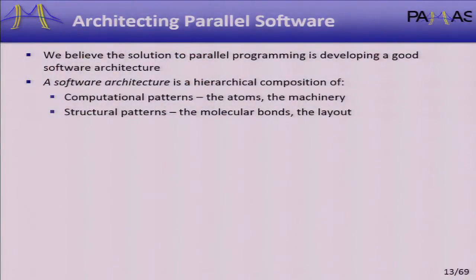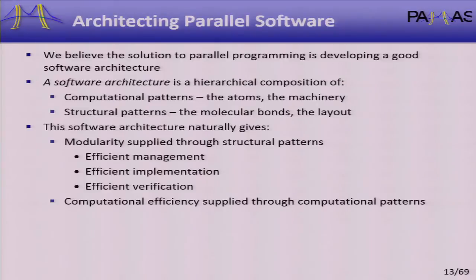The key to parallel programming is a good software architecture. That architecture is hierarchical — a composition of computations (the atoms), while structural patterns are like the molecular bonds or the layout of a factory. Software architecture naturally gives you modularity through structural patterns, and the focus on computations gives you the actual efficiency you need for parallel programming.